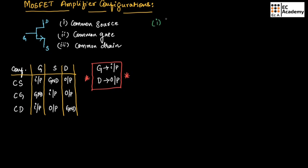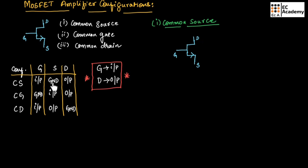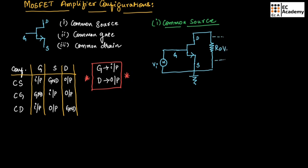Let us draw different circuits for the different configurations. For common source configuration, input is connected to the gate terminal, output is connected to the drain terminal, and source is connected to ground. At the gate terminal we connect the input, and at the drain terminal we can measure the output. We connect a resistor RD at the drain, and across this resistor we can measure the output voltage. This is the general circuit for common source configuration.